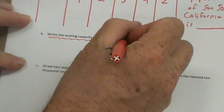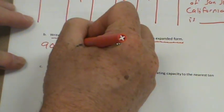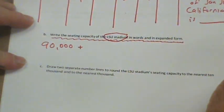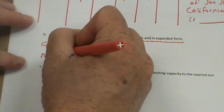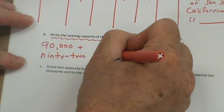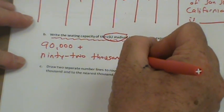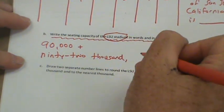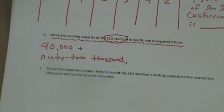Now it says, write the seating capacity of the LSU Stadium in words and in expanded form. Remember, they're talking about the LSU Stadium, not San Jose. So I'm going to start off with the expanded form. And I'm going to say 90,000 plus. You've got to finish the rest. I'm going to help you on the word form too. Ninety thousand. And you finish the rest.